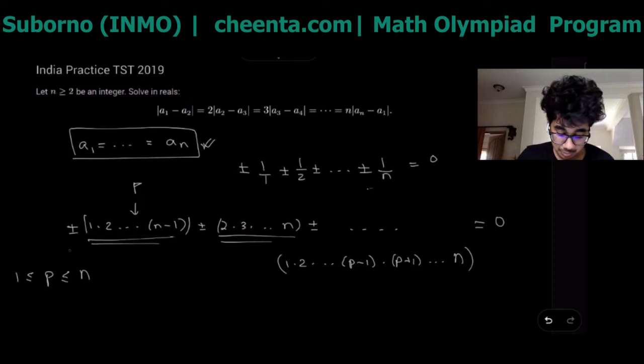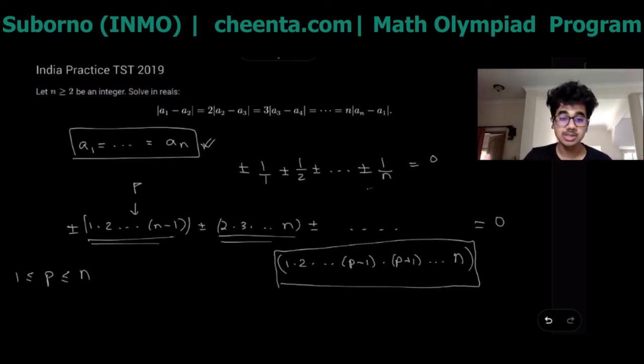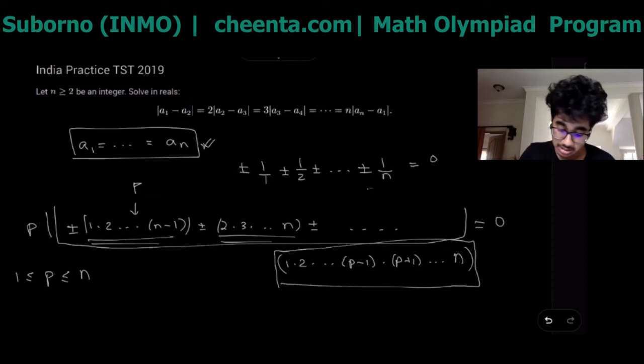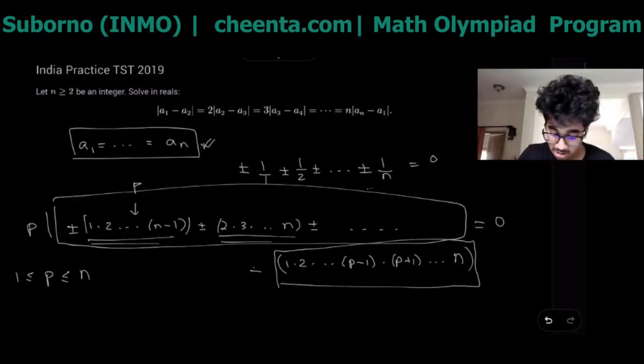Suppose p was here then it is in every set except this term which is one times two times up to p minus one and then it skips out p and then goes on to n. We get that because the sum of the whole thing is zero, the right hand side is divisible by p which would mean the left hand side is divisible by p and every single term other than this one has p so it is divisible by it.